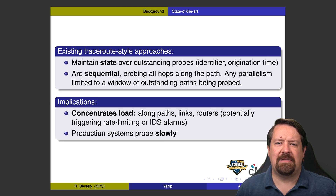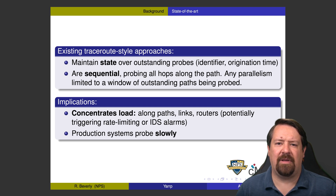If we do try to accelerate it, that means it's going to concentrate load along particular paths. A particular path being probed will see more and more TTLs expiring, which has the potential to trigger ICMP rate limiting in routers or other IDS alarms. As network researchers, we certainly want to be good internet citizens and not cause extra work for the folks running the internet, or in the case of ICMP rate limiting, degrade our own results by getting fewer TTL expired messages than we should. So the implication is that production systems have to go slowly.